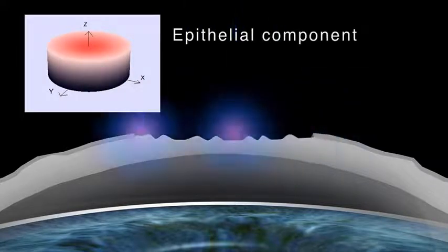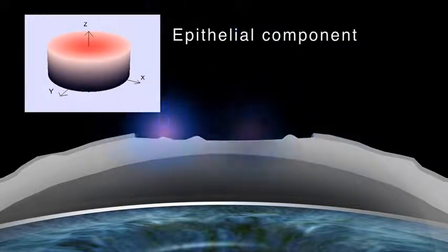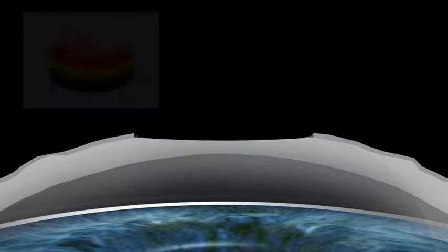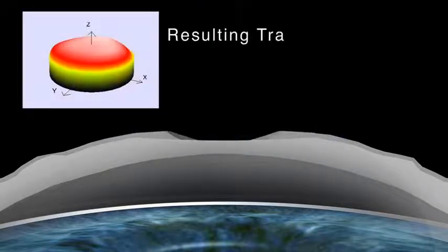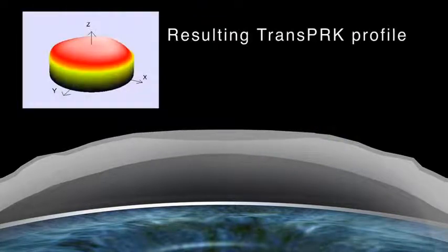TransPRK is a versatile approach. It's useful in all cases where a difficult epithelial flap is expected or when the epithelium covers corneal irregularities of the stromal tissue.